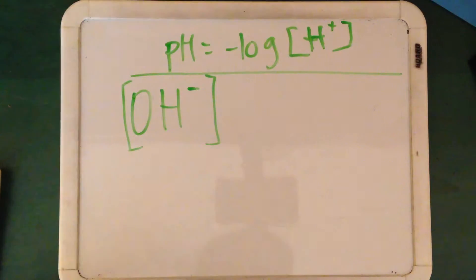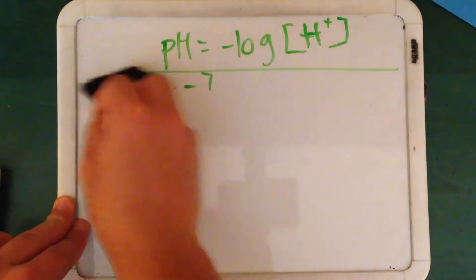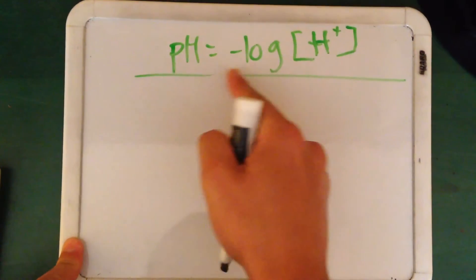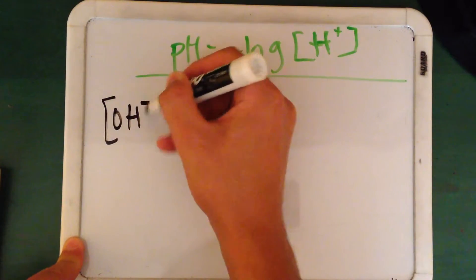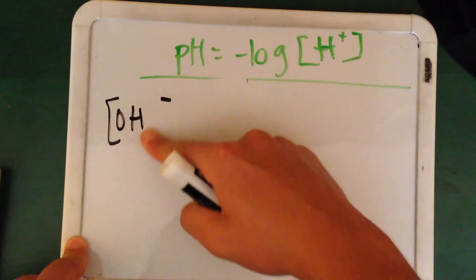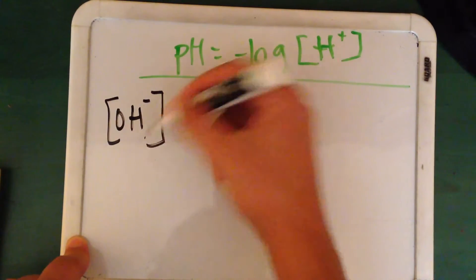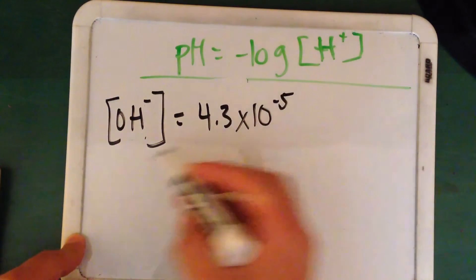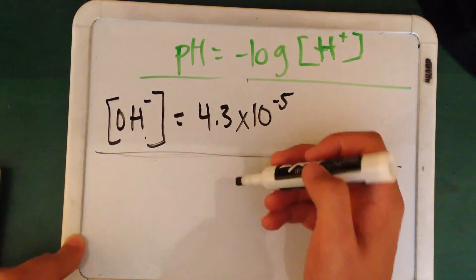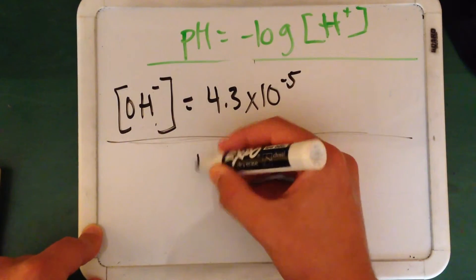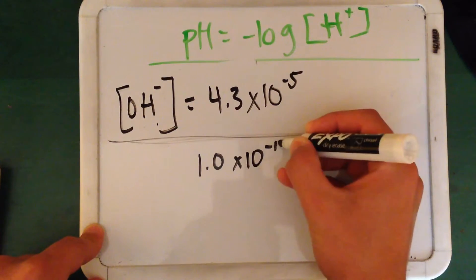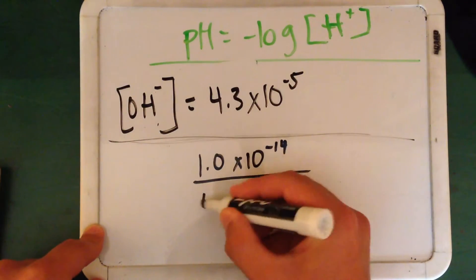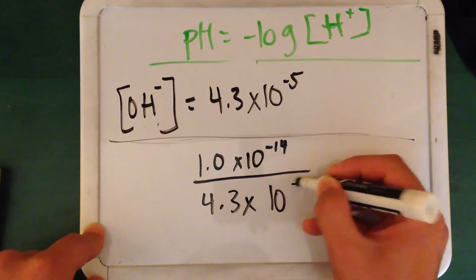So in our first problem, let's say we have our OH. Our OH is equal to 4.3 times 10 to the negative 5. So we divide the constant number 1.0 times 10 to the negative 14 by this. So 4.3 times 10 to the negative 5. And this always happens.